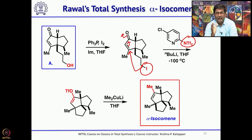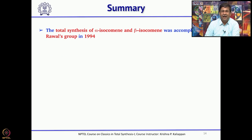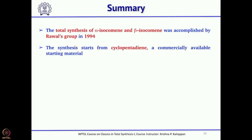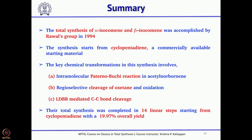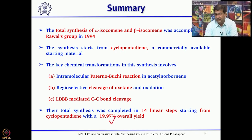Rawal cleverly used the Diels-Alder reaction, Paternò-Büchi reaction, opening of the oxetane, and opening of the bridged system to the fused system to synthesize both alpha and beta isocomine. His synthesis started with commercially available, inexpensive cyclopentadiene. Overall, the total synthesis was done in 14 linear steps with a yield close to 20%, which is really very good considering the triquinane complexity.